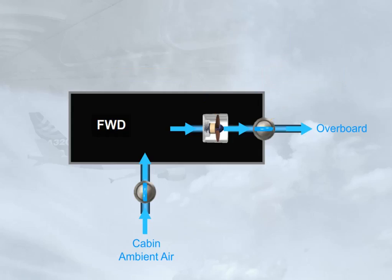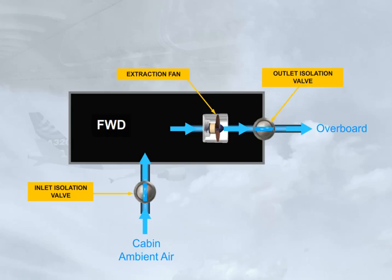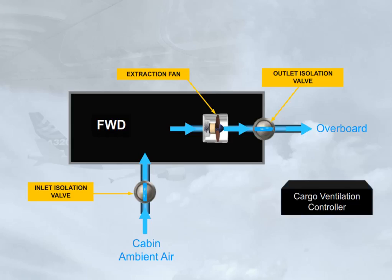The operation of the two isolation valves and the extraction fan is controlled automatically by the cargo ventilation controller. Note: the extraction fan will be running if on ground, or if the differential pressure is less than 1 psi.